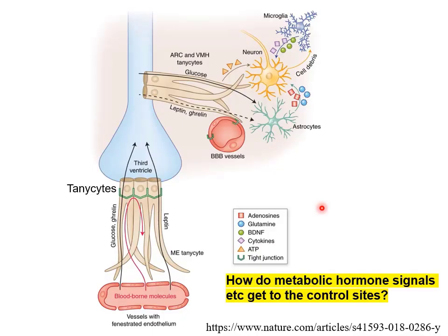That leaves one major question: how can metabolic signals or metabolic hormone signals get to the control sites for appetite, reproduction, and temperature regulation? These circulating signals are in the blood, but most blood vessels within the brain have a blood-brain barrier that should provide a barrier preventing metabolic hormone signals from getting into the brain.